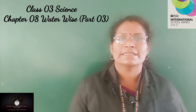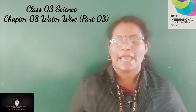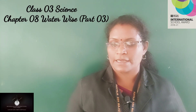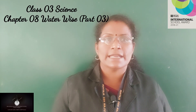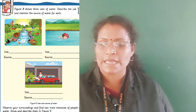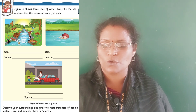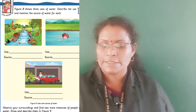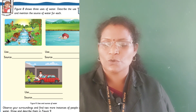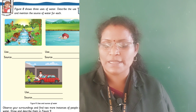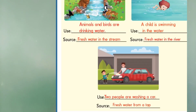Let us begin with Activity 8.11. Figure 8 shows three uses of water — describe the use and mention the source of water for each. In the first picture, you can see animals and birds are drinking water, and in the second picture, a child is swimming in the water.